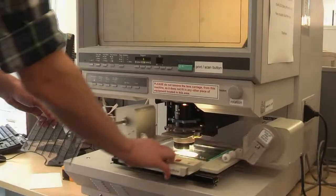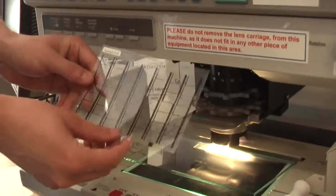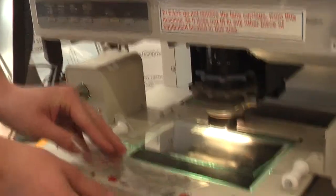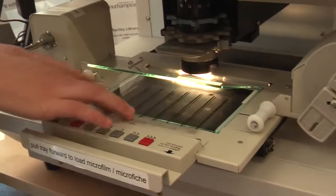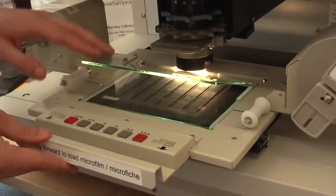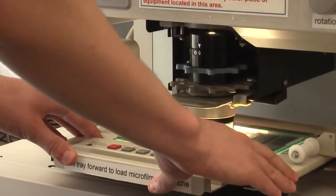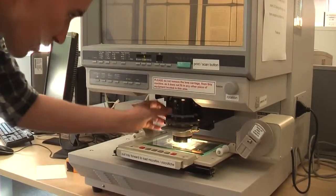You can also use the machines for microfiche. These are microfilms, but on a single plastic sheet. To use them, simply pull up the tray and place the fiche upside down and facing towards you under the glass. Then just push it back under the microscope and it should appear on the screen.